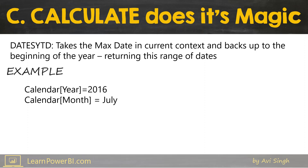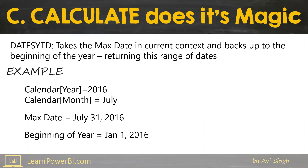Let's see that in an example. Imagine if the incoming filter context was this — and remember, to keep yourself honest, say it in terms of table column equals value — so Calendar[Year] = 2016 and Calendar[Month] = July. Then the max date becomes July 31, 2016, and the beginning of the year is January 1, 2016.